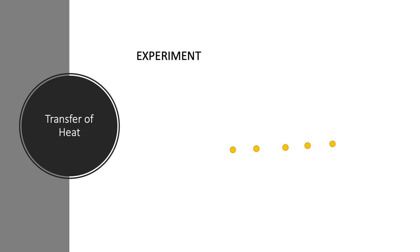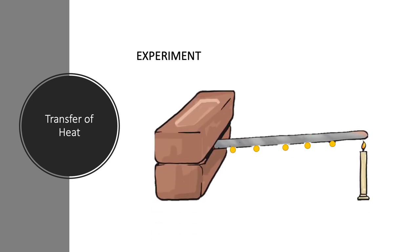We have learned how to find out how hot or cold something is using a thermometer, the quantity temperature, and the units degree Celsius and degree Fahrenheit. Now let's explore how heat moves. In this experiment, a metal scale is placed between two bricks with a candle at one end, and wax is stuck at various points along the scale. As the scale becomes hot from the candle, the wax melts and falls down, showing us how heat travels along the scale.